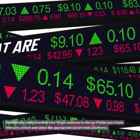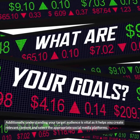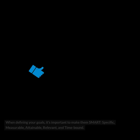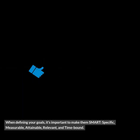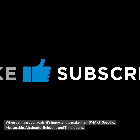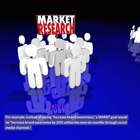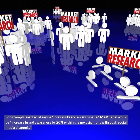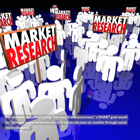Additionally, understanding your target audience is vital as it helps you create relevant content and select the appropriate social media platforms. When defining your goals, it's important to make them SMART: specific, measurable, attainable, relevant, and time-bound. For example, instead of saying "increase brand awareness," a SMART goal would be: "Increase brand awareness by 20% within the next 6 months through social media channels."